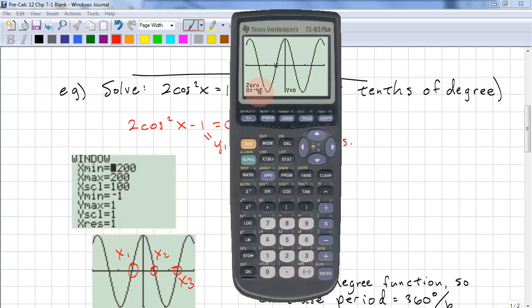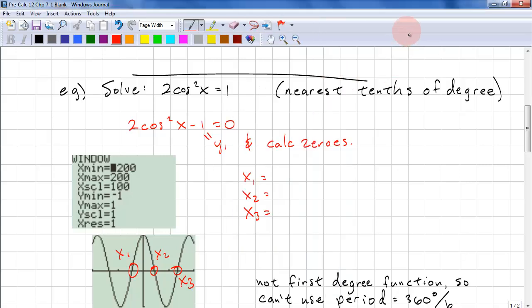This result happens to be precise, so it's not a decimal value. This is negative 45 degrees. And if you do x2 and x3, you'll find that this is 45 degrees and this is 135 degrees. Please do the calculations on your own to make sure that you're using your calculator correctly.